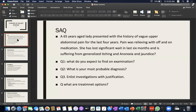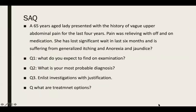Today we'll discuss something about the biliary system. Before the discussion, look at this scenario: a 65-year-old lady presented with history of upper abdominal pain for the last four years. Pain was relieving with off-and-on medication. She has lost significant weight in the last six months and is suffering from generalized itching, anorexia, and jaundice.